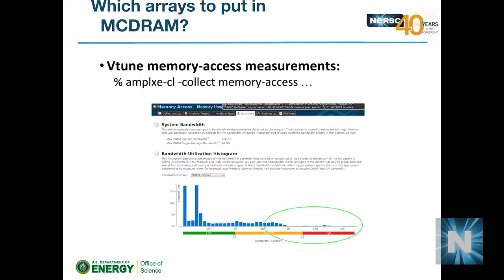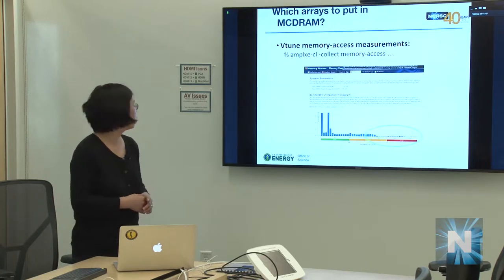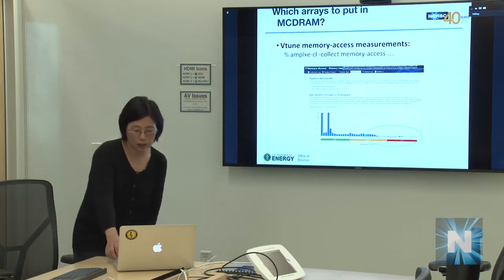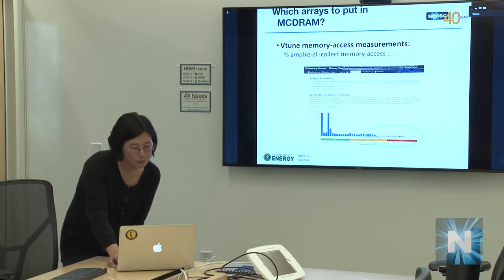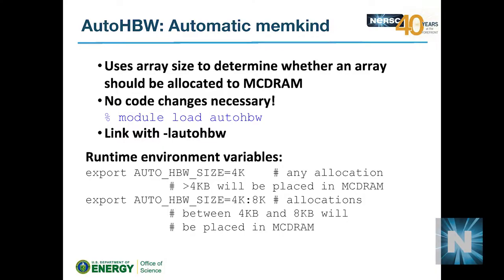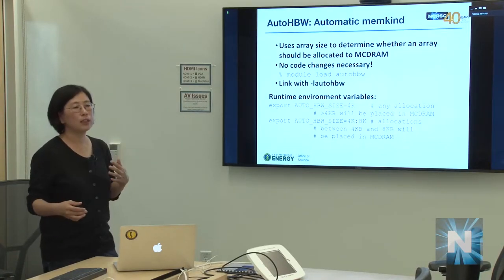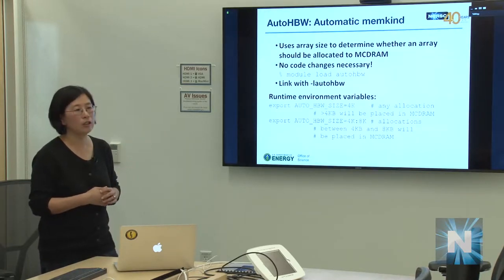To identify which variables are good candidates for MCDRAM placement, use Intel VTune's memory access collection feature. There is also the 'auto-HBW' library: instead of identifying specific variables, you set criteria such as 'place any allocation larger than 4K into MCDRAM' via environment variables. Load the module and the runtime will automatically route qualifying allocations to high-bandwidth memory.